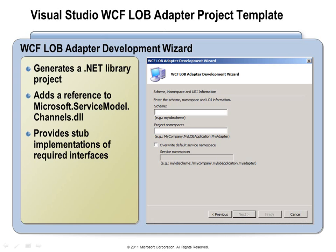When you install the WCF Line of Business Adapter SDK, you get a Visual Studio adapter project template that gives you a jump start on writing adapter code by walking you through a wizard and collecting key information. The project generates a .NET library with configuration details already in code or configuration files, enabling you to start right away on the logic and interface between WCF messages and your system. It also adds references to the Microsoft Service Model Channels DLL and stubs out all the interfaces.